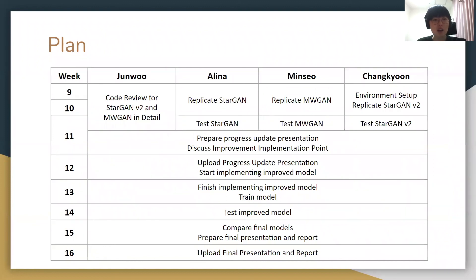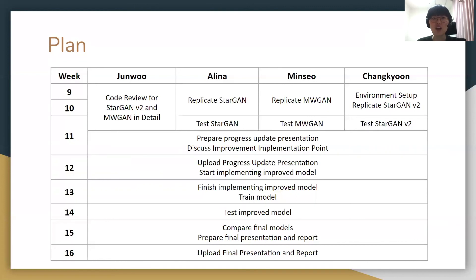Finally, our weekly plan is as follows. For the first two and a half weeks, Juno will review the codes of StarGAN V2 and MWGAN in detail, and the other three will each replicate and test the model from one paper. For the next half week, everyone will prepare for the progress update presentation while discussing how to implement our improved model. For week 12, we will upload the progress update presentation and start implementing the improved model. We will go into more detail when we present our progress update. Thank you.